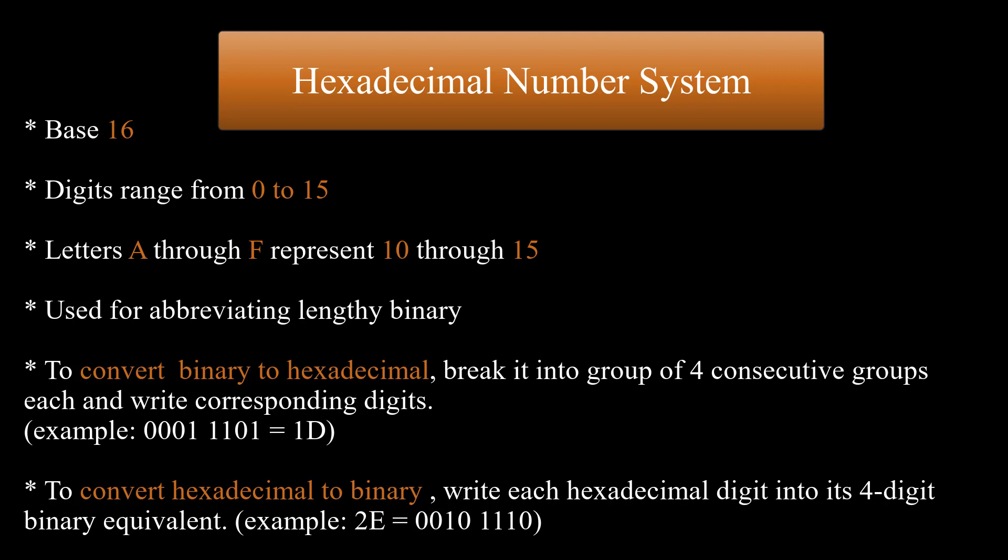To convert a binary number to its hexadecimal equivalent, we need to break it into groups of 4 consecutive groups each. Starting from the right, and write those groups over the corresponding digits of the hexadecimal numbers. For example, binary number 00011101 is equivalent to hexadecimal 1d.